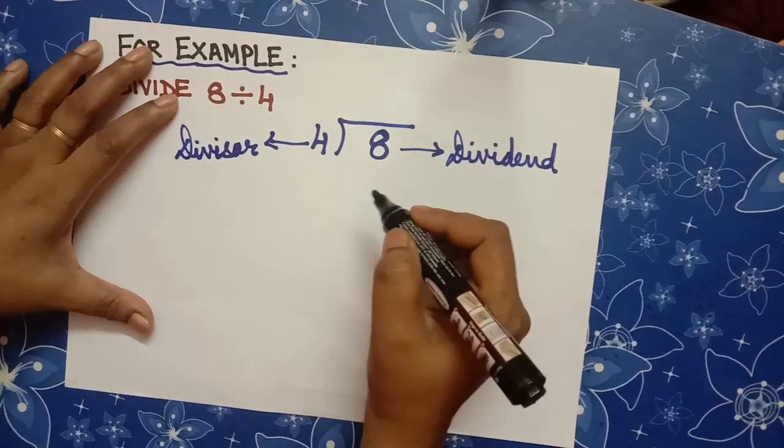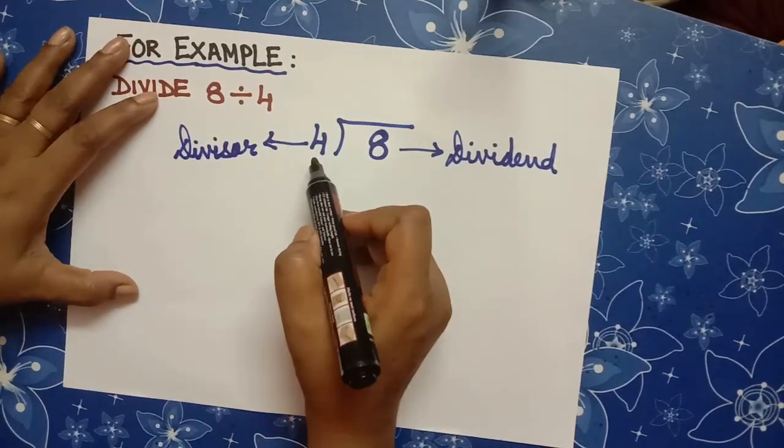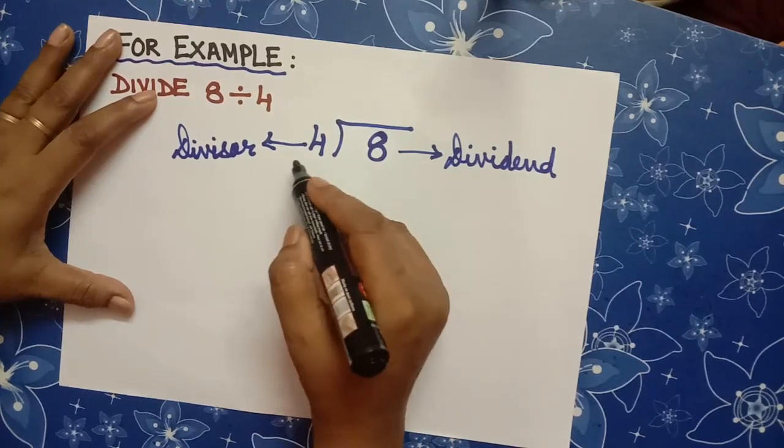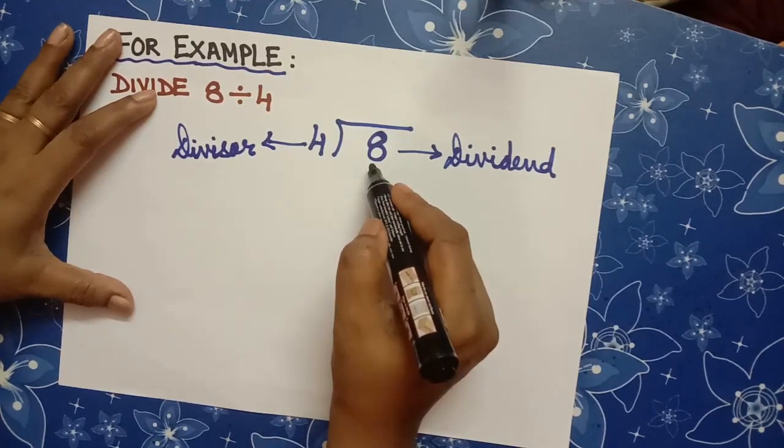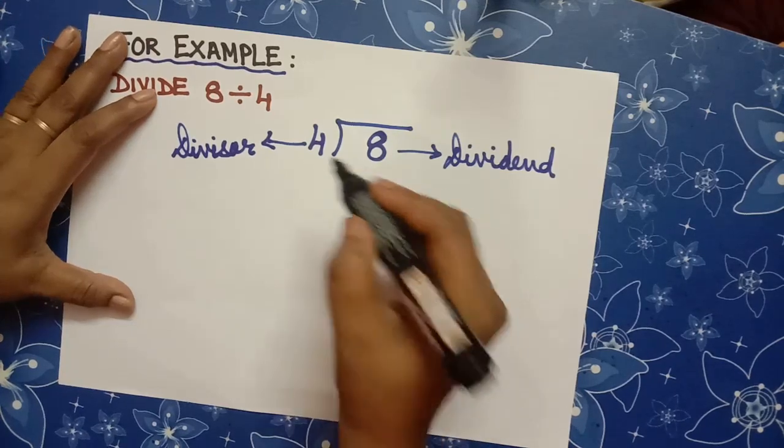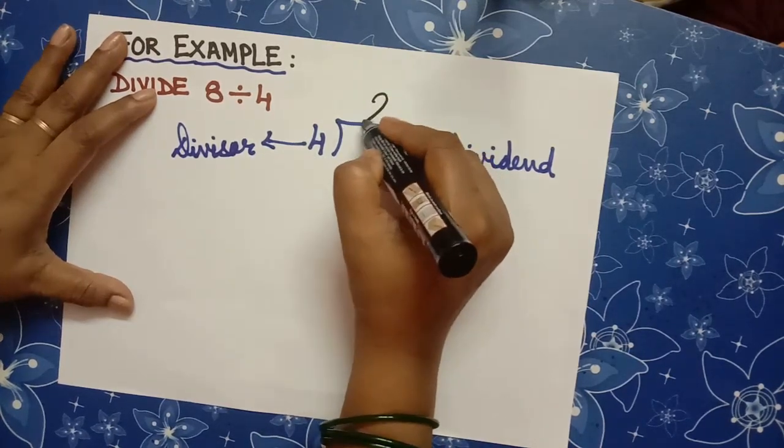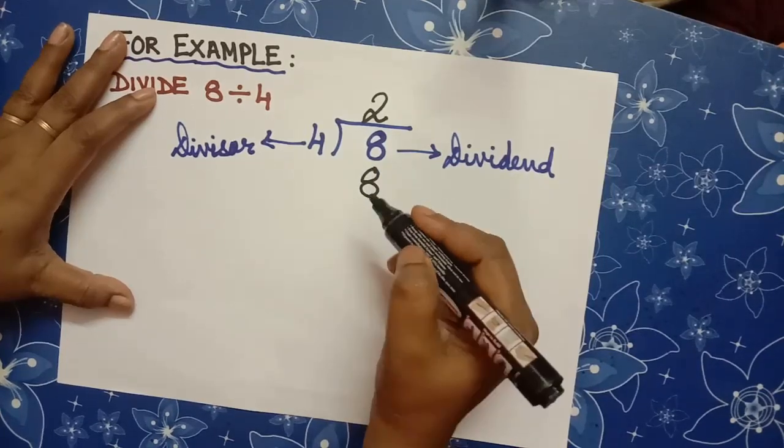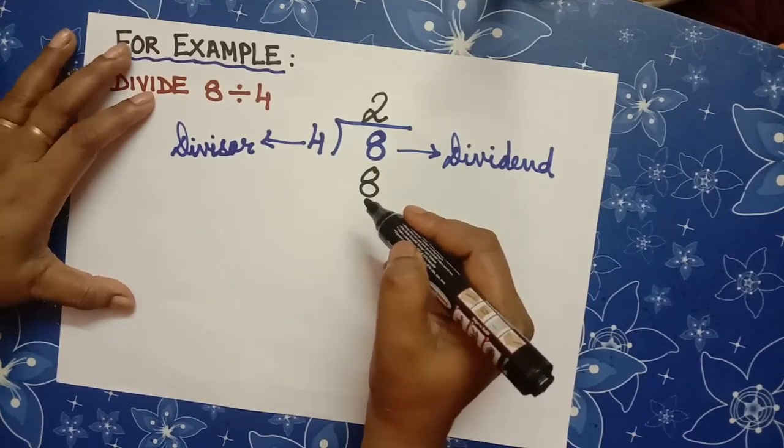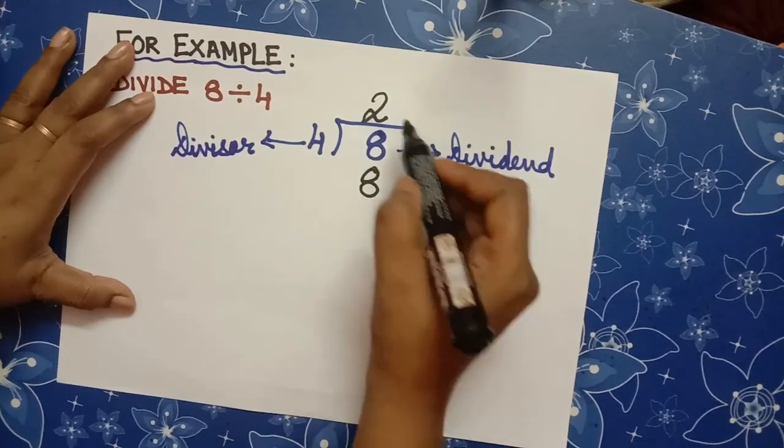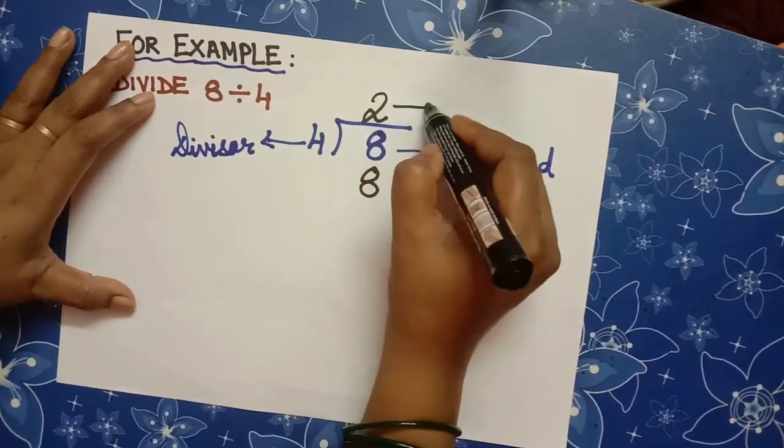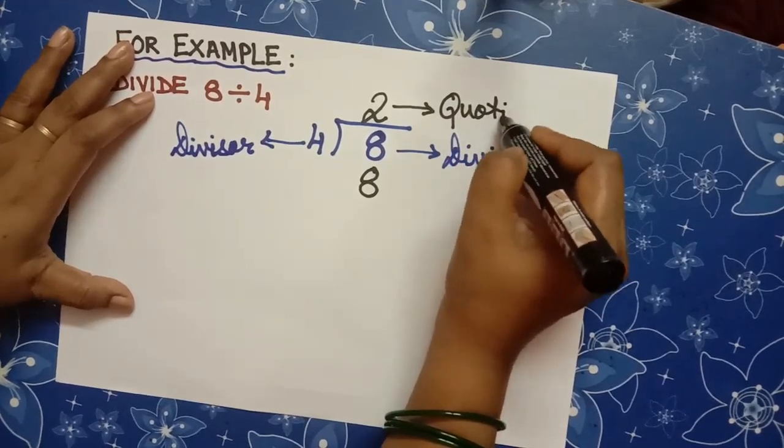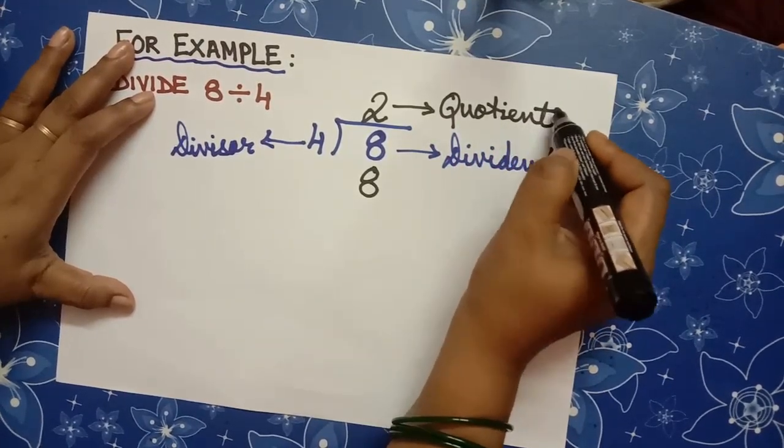Use 4 tables here. 4 into 2 are 8. 4 can be divided in 8, 2 times. So, 4 times 2 is 8. So, the quotient is 2. That is, the answer is 2.